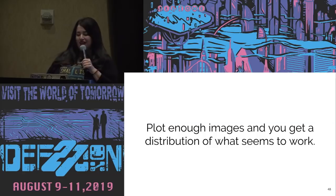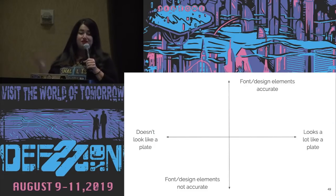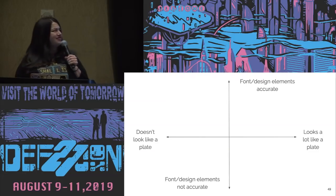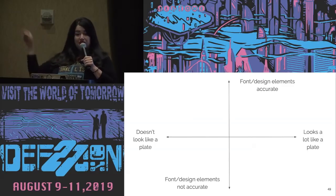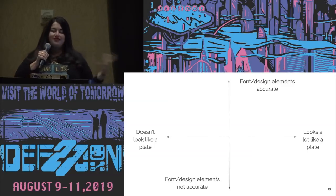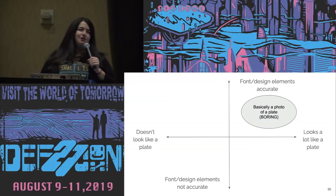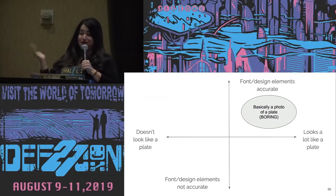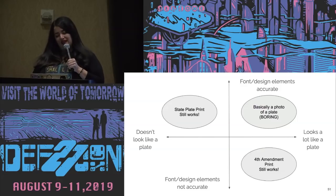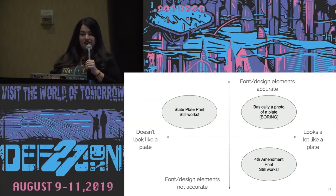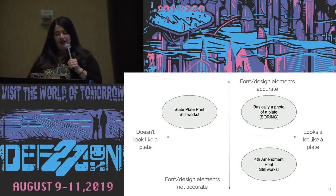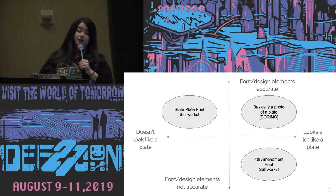Plot enough images and you get a distribution of what seems to work. You have either that your font and design elements are hyper accurate — it looks a lot like a plate, living in a little rectangle — or they're not. The ones that work really well are accurate in both dimensions, basically a photo of a plate, which is boring. But other things also work: the state plate print where font and design elements are more accurate works pretty well even without rectangles, and the Fourth Amendment print I'm wearing — font is inaccurate and missing design elements — still works.